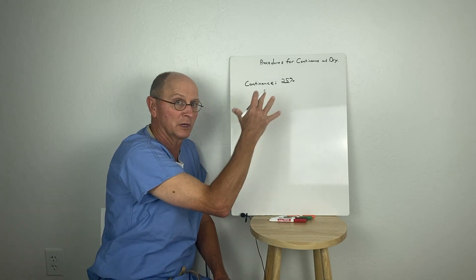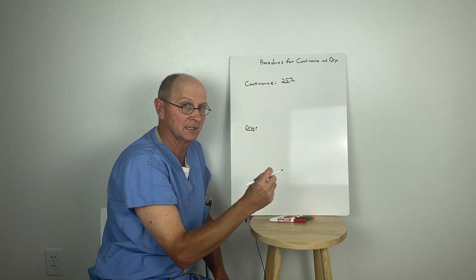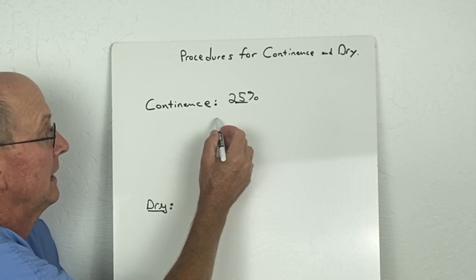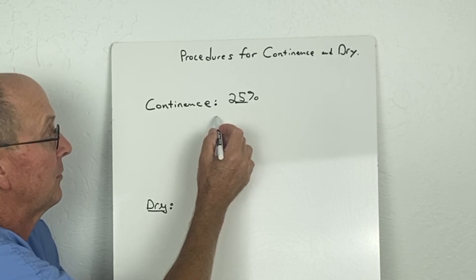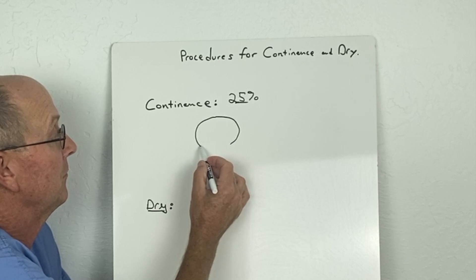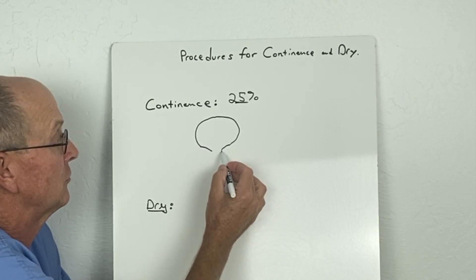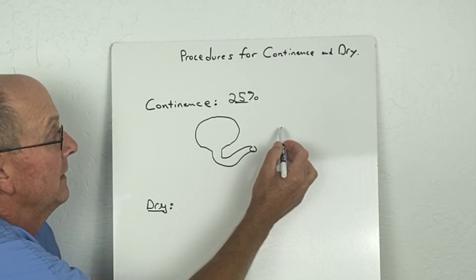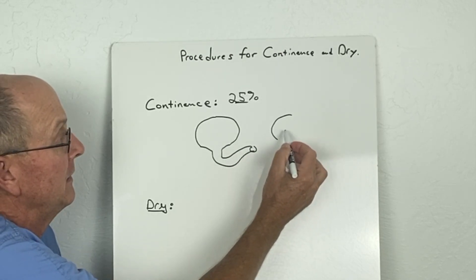Remember we close the bladder and rebuild the bladder neck. Even after a complete primary repair or with the modern stage repair, if you're not dry you're going to need some kind of procedure. This would be a male and this would be a female.